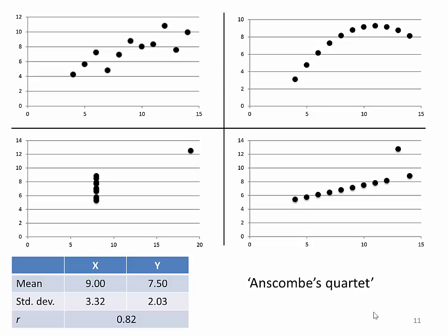We have a problem. All of these scatter plots - in all of them the mean of x is 9, the mean of y is 7.5. They all have the same standard deviations for x and y, and the Pearson's correlation coefficient r for each of them is 0.82. This is called Anscombe's Quartet. What does this tell you about the use of the mean and standard deviation for describing your data? These are accurate numbers - they're true. There are patterns in the data that you don't know just by generating the mean, the standard deviation, and the correlation coefficient.